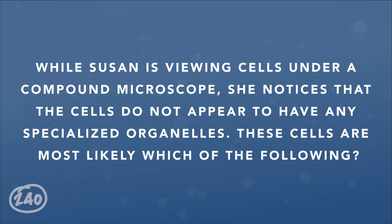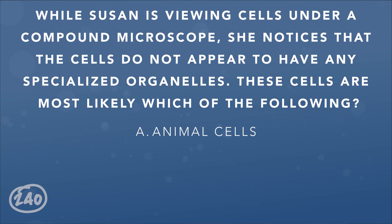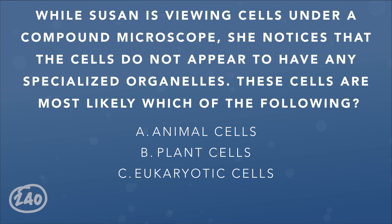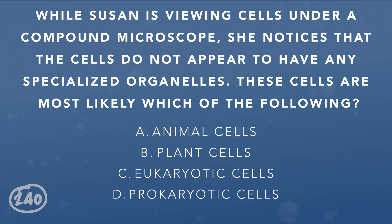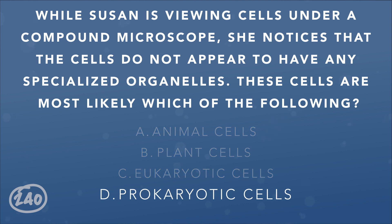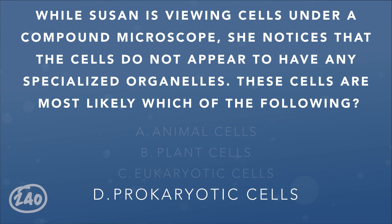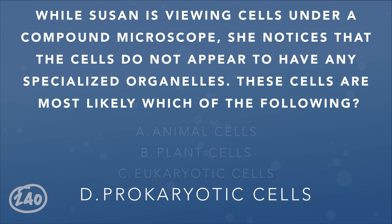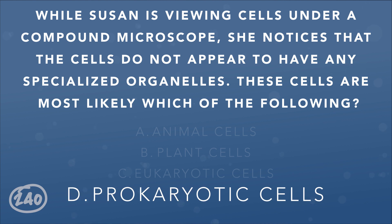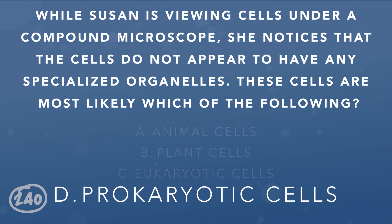Question 3: While Susan is viewing cells under a compound microscope, she notices that the cells do not appear to have any specialized organelles. These cells are most likely: A. Animal cells, B. Plant cells, C. Eukaryotic cells, D. Prokaryotic cells. The correct answer is D. Prokaryotic cells do not contain specialized membrane-bound organelles — examples include bacteria, blue-green algae, and other primitive microorganisms.